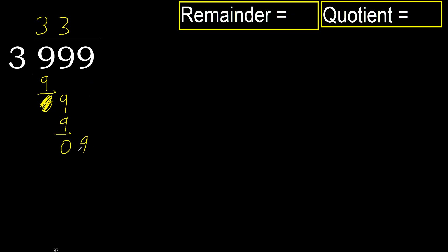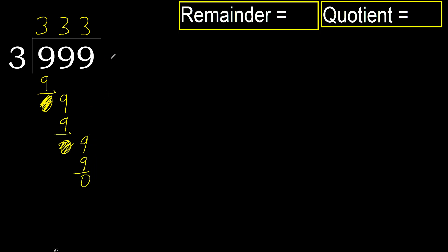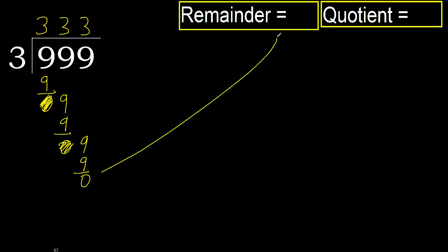Next. 9. 3 multiplied by 3 is 9. 9 minus 9, subtract. Next — there is no remaining number, therefore finish it.